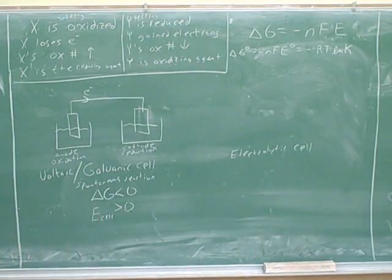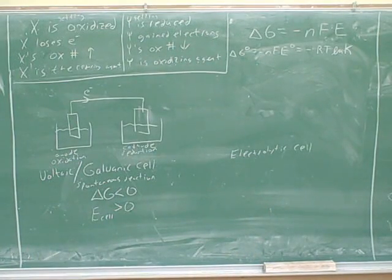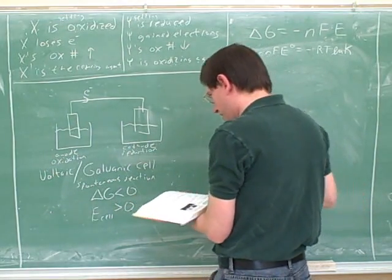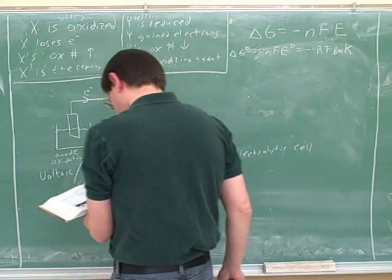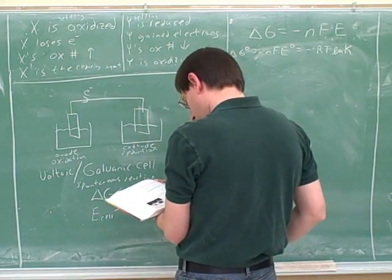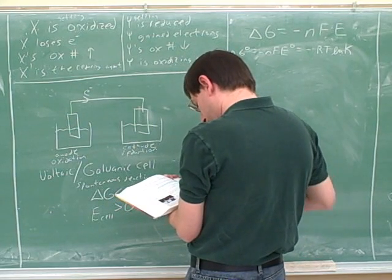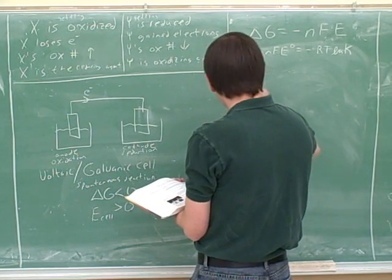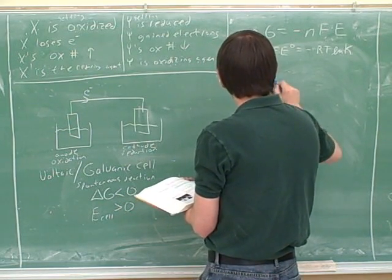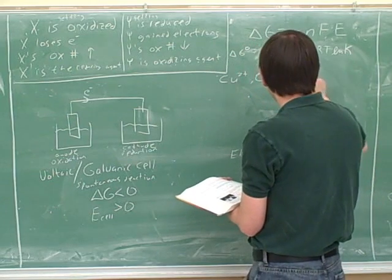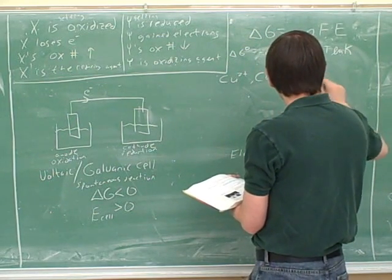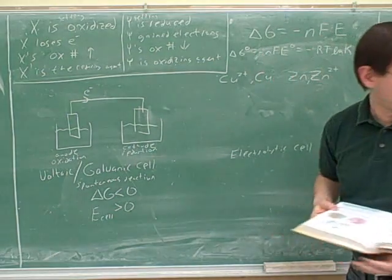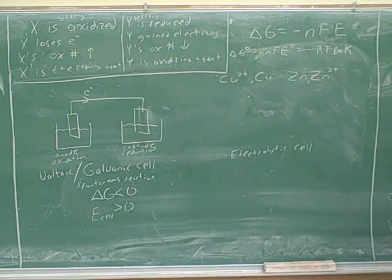Okay, good. Maybe we should take a look at the example. So let's say that over here, we have the reactions that are involving copper 2 plus and solid copper and zinc, zinc 2 plus. Let's try to figure out what's going on in each of these cells.